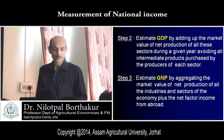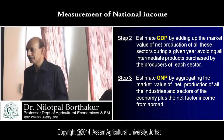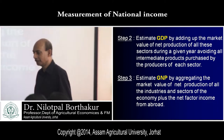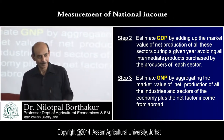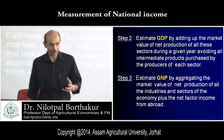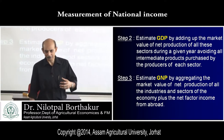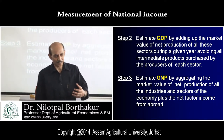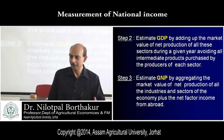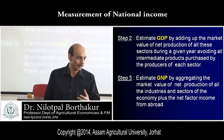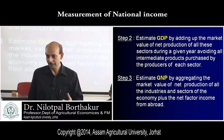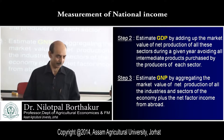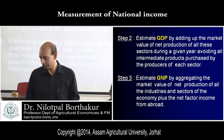Why are only final goods and services considered while intermediate goods are ignored? Because if we include intermediate goods, it creates a problem of double counting of resources. If we double count, the entire national income estimation will be inflated, so we avoid this.